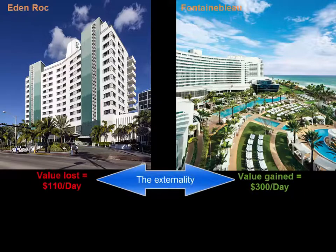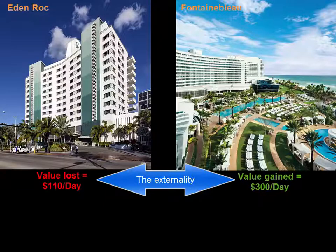Let's work out a numerical example. Here we have the Eden Rock losing about $110 a day from this shadow, and the Fountain Blue gaining about $300 per day from the extension. Note: these numbers are made up.